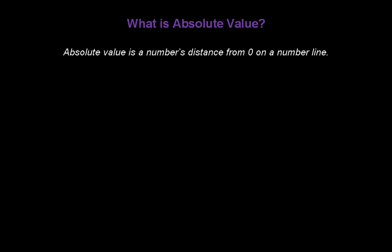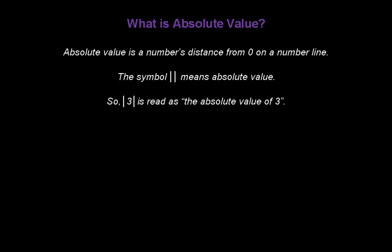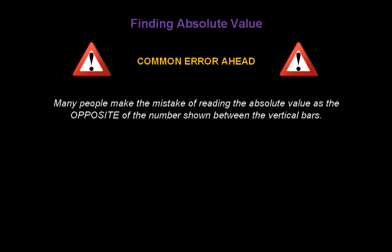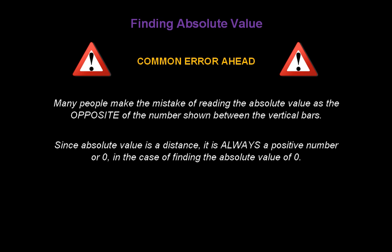What is an absolute value? Well, absolute value is a number's distance from zero on a number line. The vertical bar symbol means absolute value. So, 3 with vertical bars around it is read as the absolute value of 3. Now, I have a warning for you — please pay attention, it's a common error. Many people make the mistake of reading the absolute value as the opposite of the number shown between the vertical bars. Since absolute value is a distance, it's always a positive number, or zero in the case of finding the absolute value of zero.